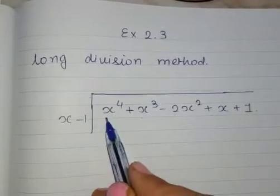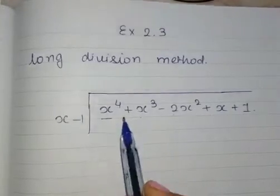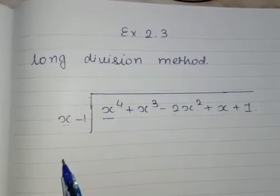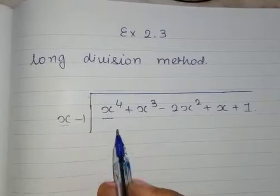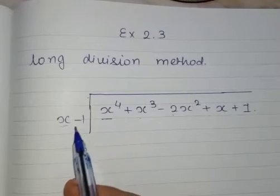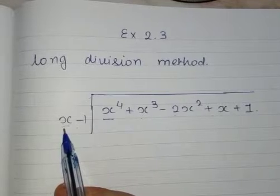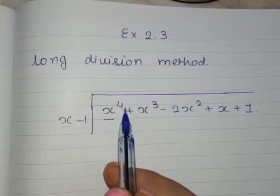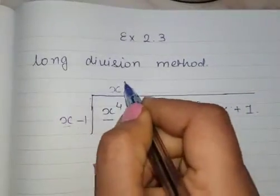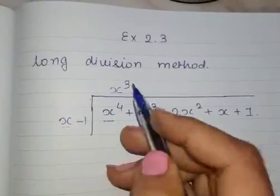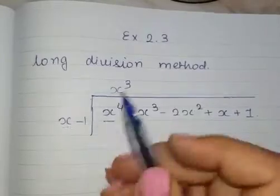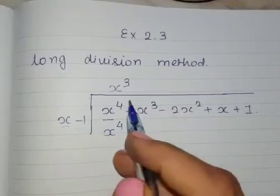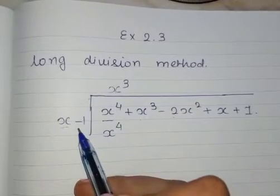First consider the first term of the polynomial and the first term of the term with which we have to divide it. So we need X raised to 4 and we are having X. With what we need to multiply this X to get X raised to 4? It is X cube. X cube into X will give us X raised to 4, and then when we multiply X cube with this minus 1.